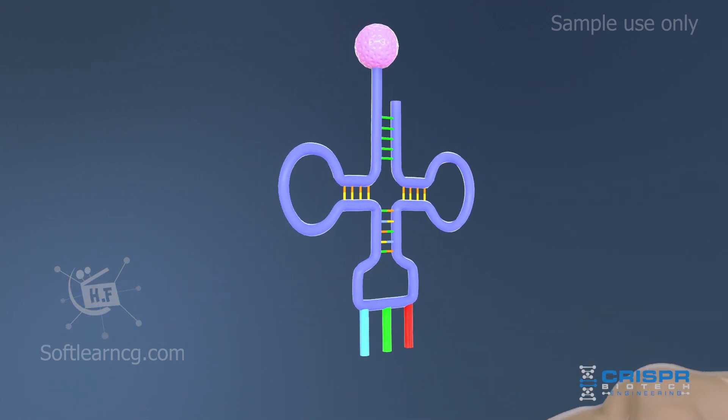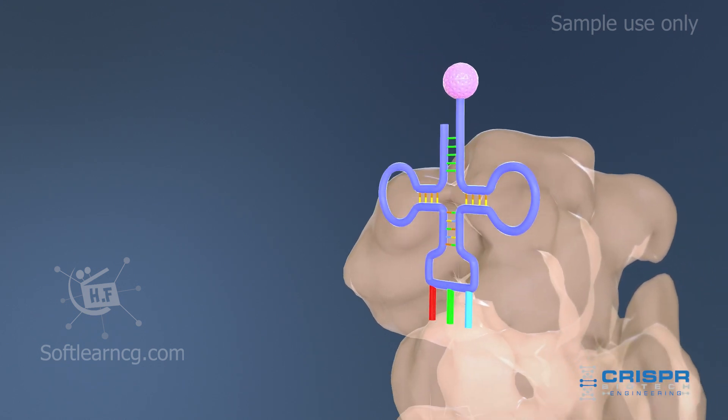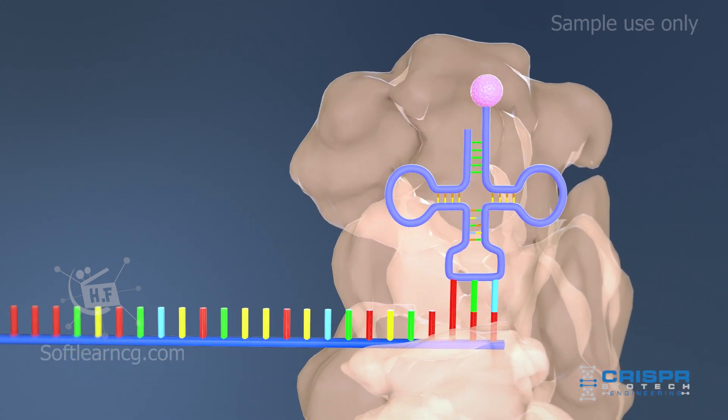A chain of amino acids is formed when the ribosome interprets the code in the messenger RNA, three bases at once.